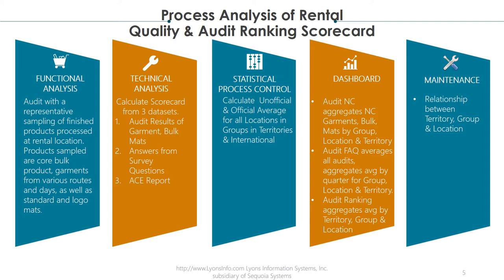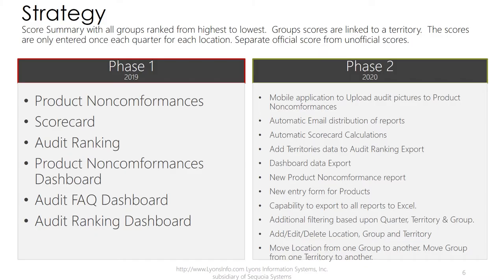Maintenance covers the relationship between territory, group, and location. Strategy: score summary with all groups ranked from highest to lowest. Group scores are linked to a territory. The scores are only entered once each quarter for each location, with a separation of official scores from unofficial scores.